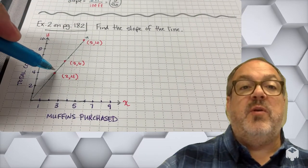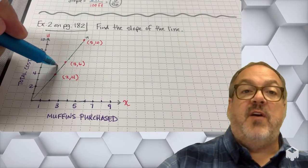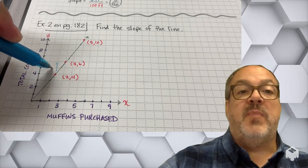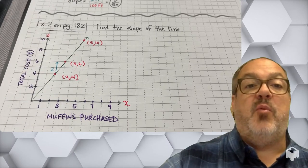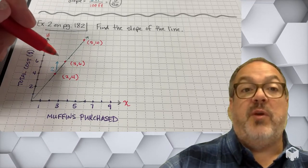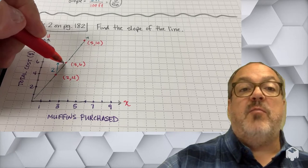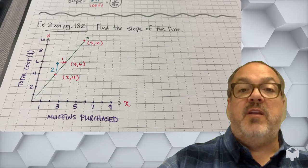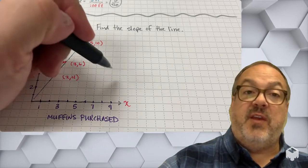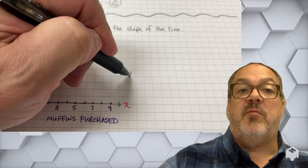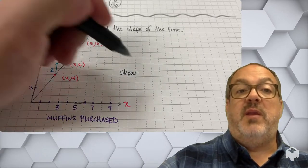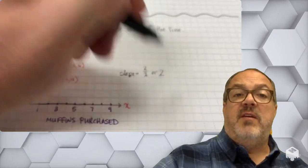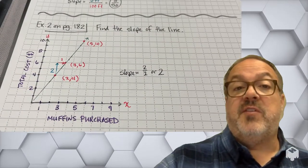In example 2 on page 182, I can find the slope of the line by just using the points that are on that line. So if I go from the point (2,4) to the point (3,6), I have risen, or have a rise, of 2 units, and my run is 1 unit. So if I think of that as the ratio of the rise over the run, that's going to be 2 over 1. And if I simplify that, it's just 2, so the slope is 2.